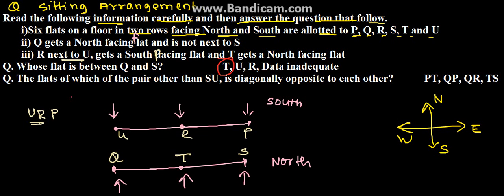The second question is: which pair of flats, other than S and U, is diagonally opposite to each other? As given in statement 3, we can say S and U are diagonally opposite.